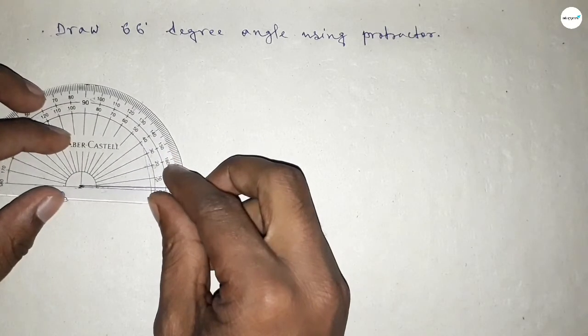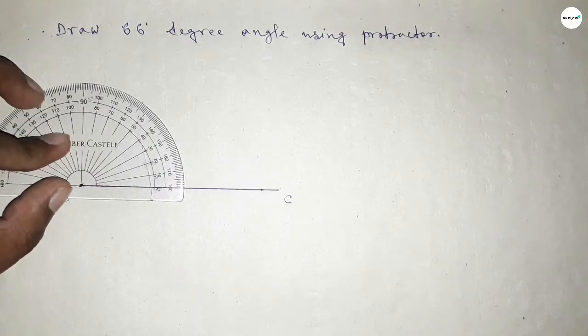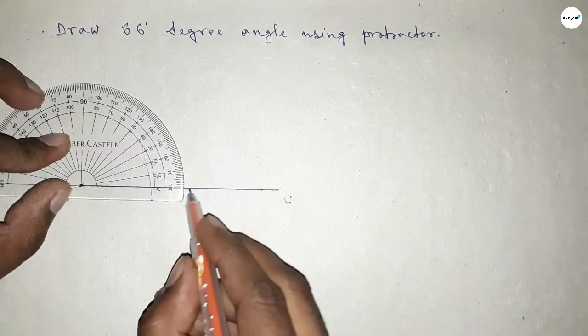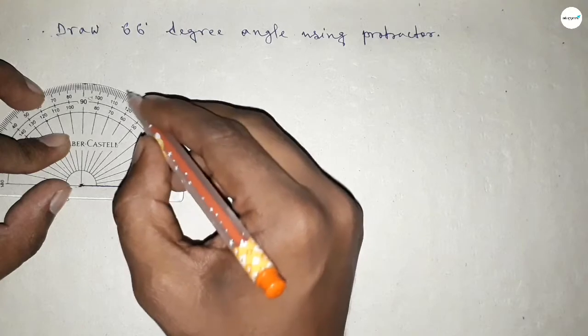Then counting the angles, so this is starting 0, 10, 20, 30, 40, 50, 60, and this is 65, and this is 66 degrees. So this is 66 degrees.